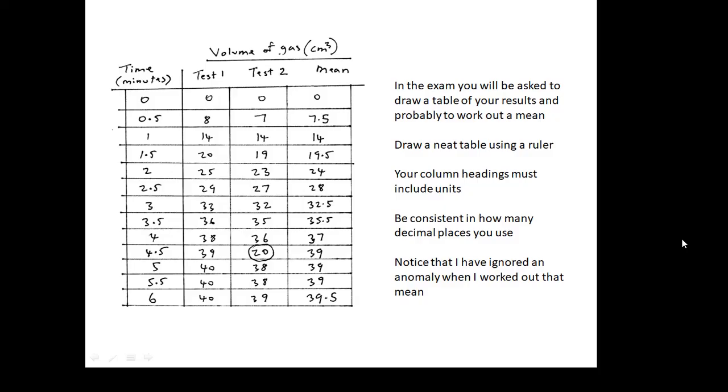Be consistent in how many decimal places you use. It's up to you how many you use, but use a sensible number. It depends on the actual value of your readings. It's more important how many significant figures there are. But be consistent and sensible in your use of decimal places. And notice, if you look at the numbers, notice that I've identified an anomaly. Clearly that 20, I've drawn a circle around it, doesn't fit. It's an anomaly. And when I work out the mean, I ignore the anomaly.